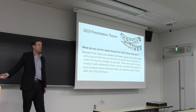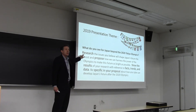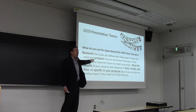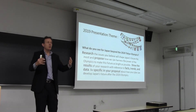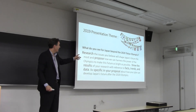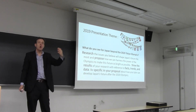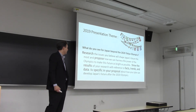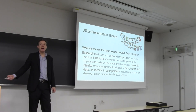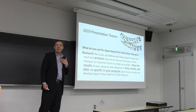Let's break this down. Japan after next year's Olympics — research issues you think are important. Propose and make a plan for how we can take all of this energy from the Tokyo Olympics — the money, attention, everything — and use it for something for Japan in the future. Show the results of your research with facts, trends, and data. You need to show the basis for your idea. What do you think will shape Japan's future? That's your decision, your idea, your opinion.